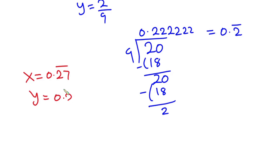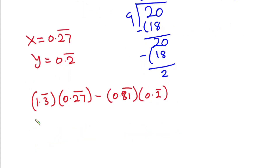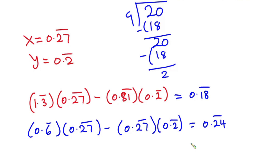Plugging x = 0.2̄7̄ and y = 0.2̄ back into the original equations, apart from minor rounding error, we get 0.1̄8̄ and 0.2̄4̄ as expected — confirming our answers. I hope you found this video useful. Please consider subscribing and don't forget to like. Thanks a lot for watching, see you in the next video!